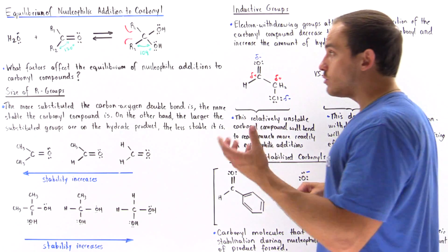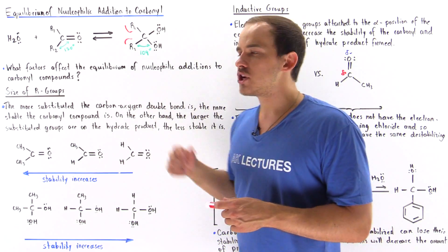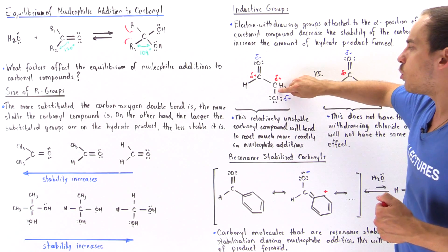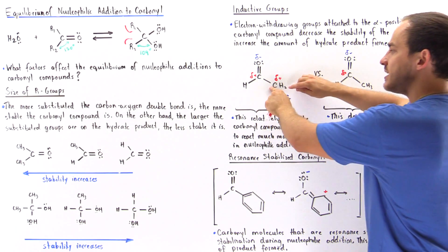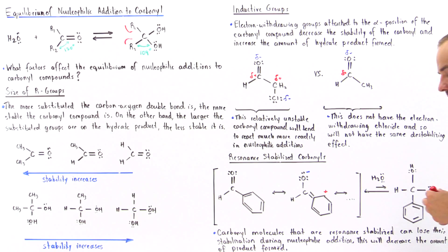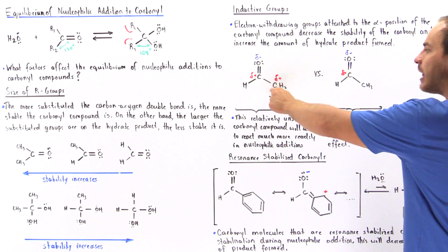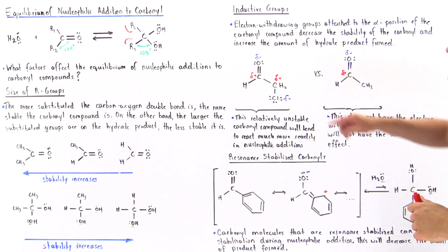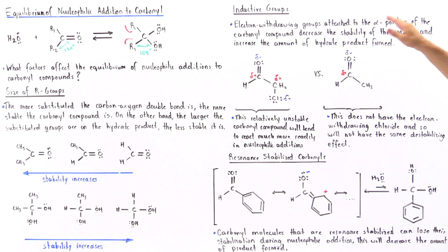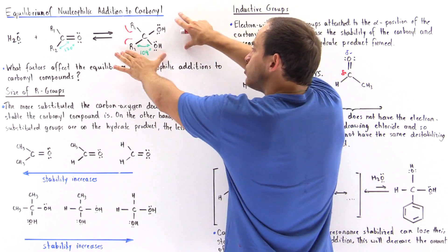The second thing that affects the equilibrium of this nucleophilic reaction is what is attached to the alpha position of the carbonyl. The alpha position is whatever is attached to the carbon right next to the carbonyl carbon containing the double bond — this is our alpha carbon position. If we have some type of electron-withdrawing group, such as chloride, attached to the alpha position carbon, the entire carbonyl reactant will be less stable. Electron-withdrawing groups at the alpha position decrease the stability of the carbonyl, making it more reactive and more likely to form our product.